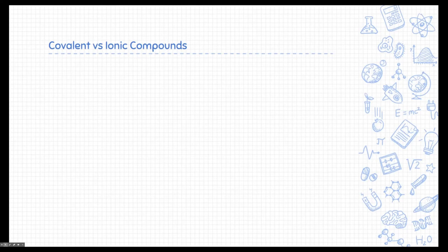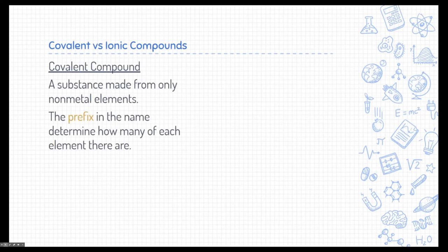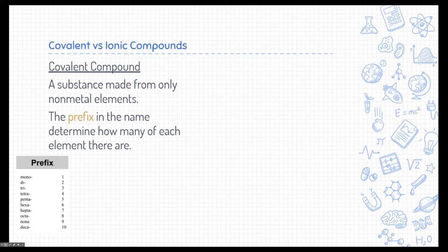How about covalent versus ionic compounds? Covalent compounds are substances that are made from only non-metal elements. In order to determine how many elements there are, we use prefixes in the name. I've highlighted prefix because there is a list of prefixes on the periodic table — things like mono meaning one, di meaning two, or octa meaning eight. All of these prefixes represent the number of elements in a compound.